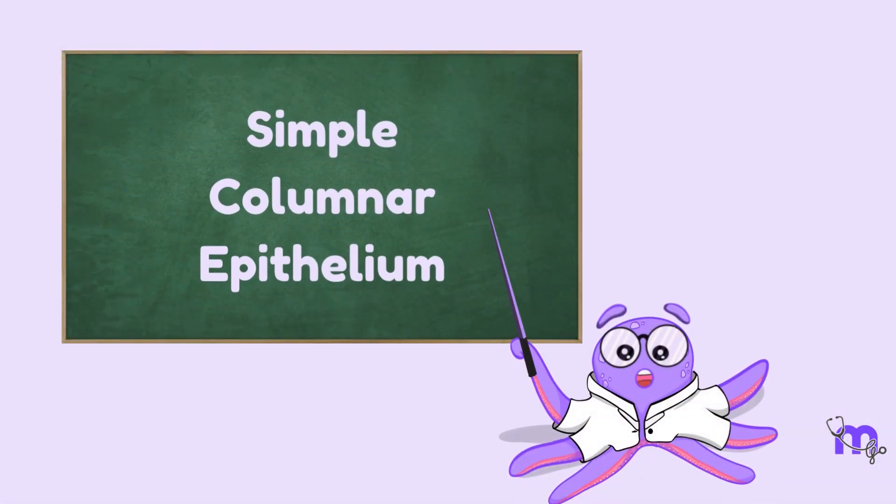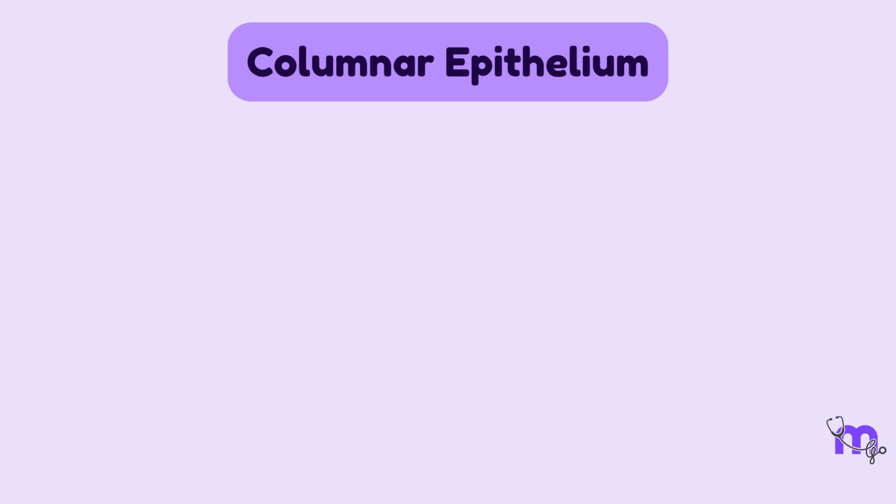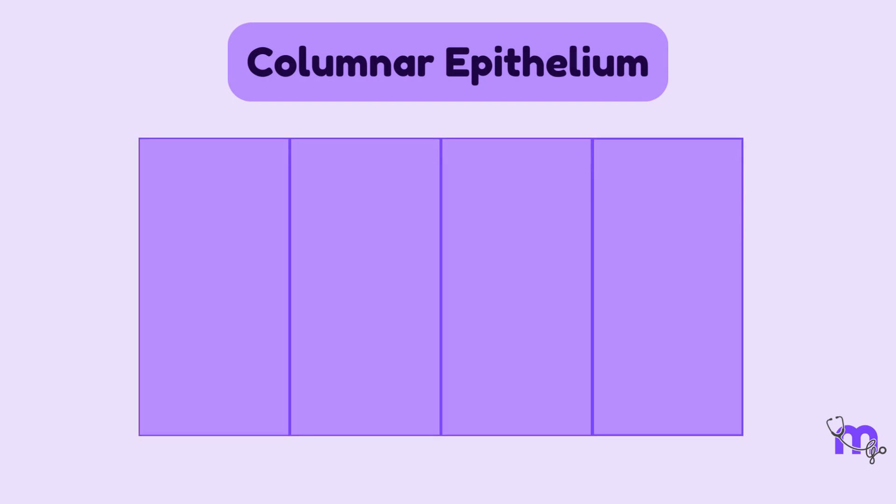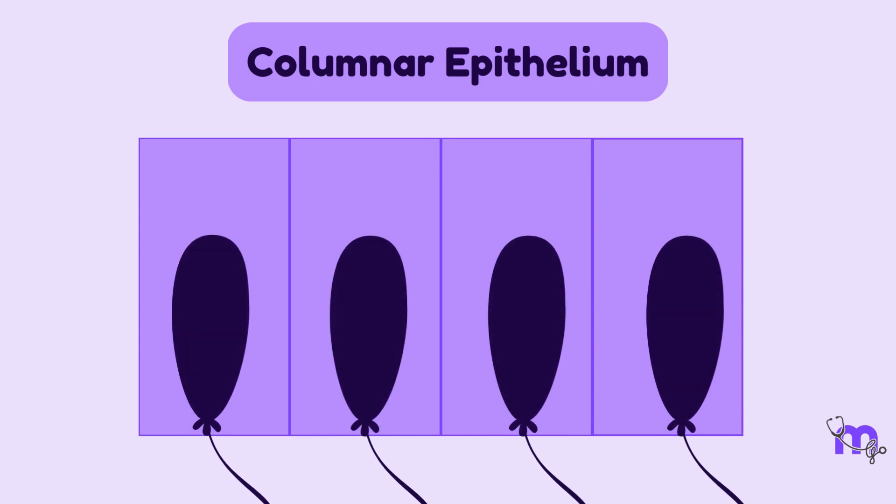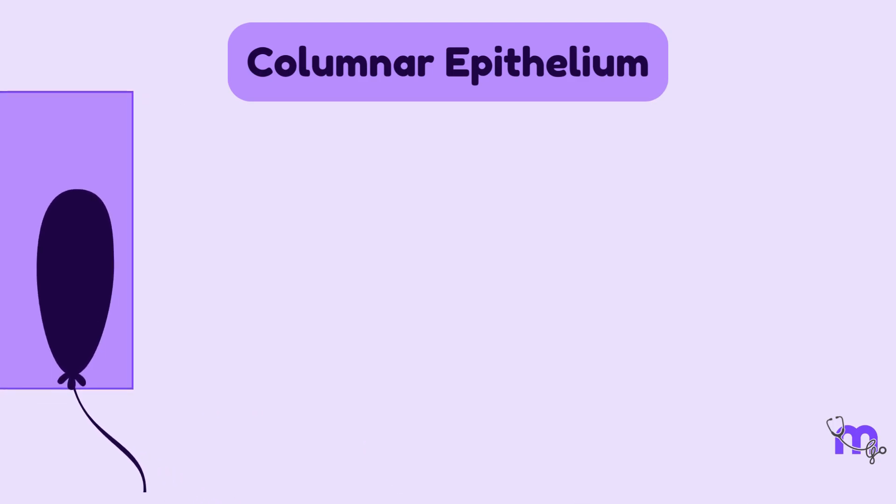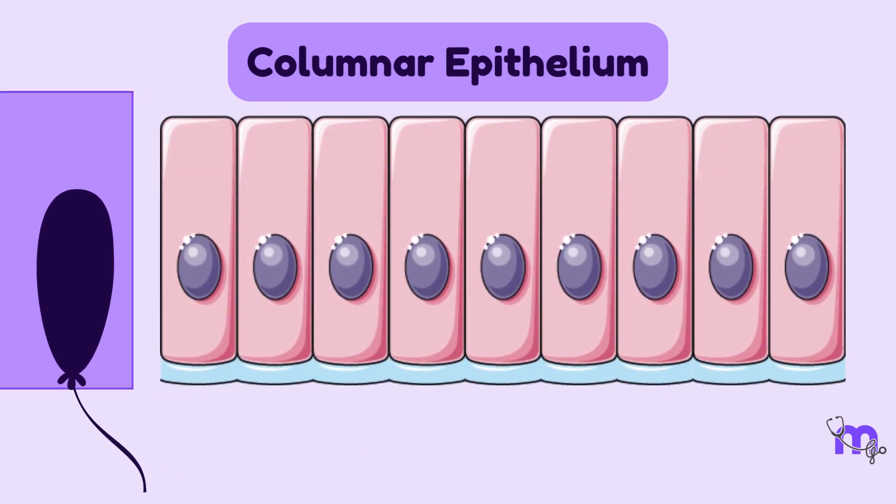Next up, we have the simple columnar epithelium. These cells can be compared to a single row of tall rectangular boxes with an oblong balloon inside them. The balloon rests at the bottom of the box. Similarly, this epithelium is made of a single layer of tall columnar cells with an elongated nucleus that lies close to its base.